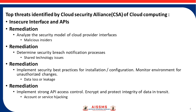What is meant by data loss and leakage? There are many ways to compromise data. Deletion or alteration of records without backup of the original content is very obvious. Unlinking a record from a large context may render it unrecoverable, as does storage on unreliable media. Loss of an encoding key may result in effective destruction of data. The third remediation is to implement storage API access controls and encrypt and protect the integrity of data in transit.